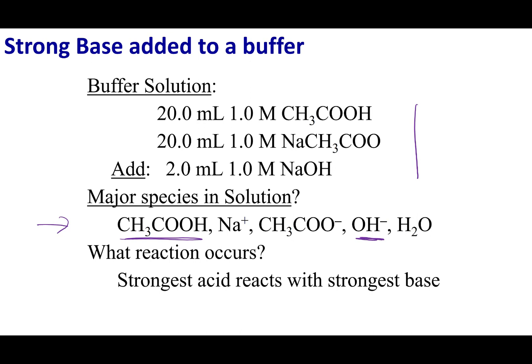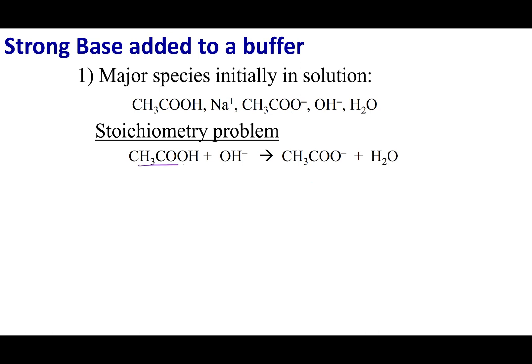The next step is to react the strongest acid with the strongest base. The acid donates a proton to the base. Since OH- is not only the strongest but also a strong base, we use a hard arrow — the reaction goes to completion. That means we have to do a stoichiometry problem.